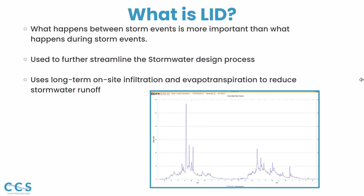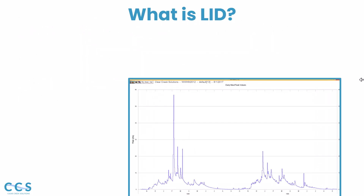So there's a variety of LID factors, but why are we utilizing LID? LID takes into account that what happens between storm events is much more important than what happens during storm events. We use LID to further streamline the stormwater design process, using long-term on-site infiltration and evapotranspiration to reduce stormwater runoff overall. It's not just about what happens during a stormwater event — it's what do we do with the water in between those events? How do we filter it, store it, and utilize evapotranspiration to disperse the water naturally?